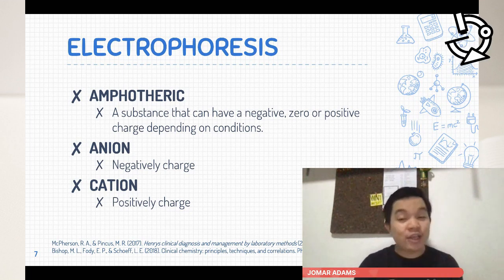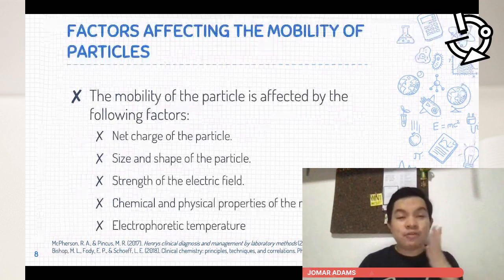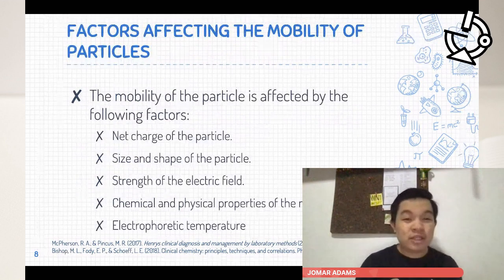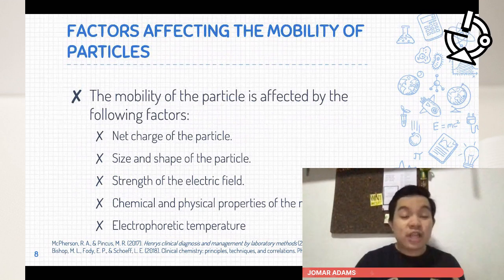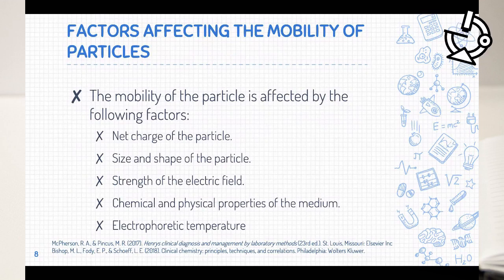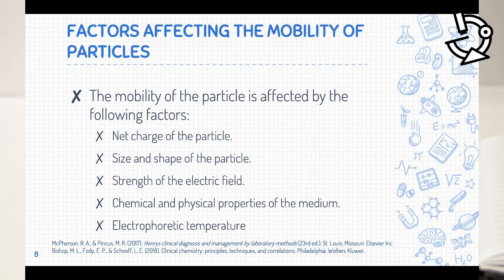Other important terms are the factors affecting mobility of particles in electrophoresis: the net charge of the particle, the size and shape of the particle, the strength of the electric field, the chemical and physical properties of the medium, and the electrophoretic temperature. These are very important and will be discussed as we go along.